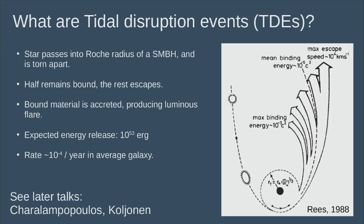Both from theory and from what we've observed quite recently, there's a rate of these things in a normal galaxy that we expect, which is 10^-4 per year.